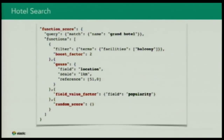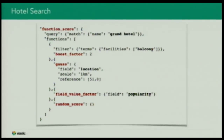Then we want the hotel to be in central London, within one kilometer of the center. If it's within one kilometer, it's a perfect match. The further away it gets, the score decreases — it will still match, but with a smaller score. That means the hotel that perfectly matches our criteria will be at the top, but a great match slightly outside will still show up.